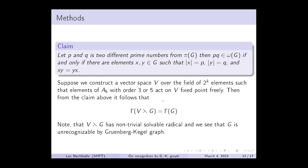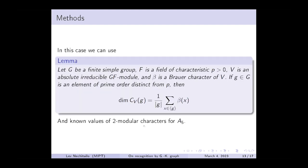For A5, two modular characters is, of course, known. And actually, for A5, we can check it using GAP system that there is such a vector space. And so A5 is unrecognizable by the Gruenberg-Kegel graph.